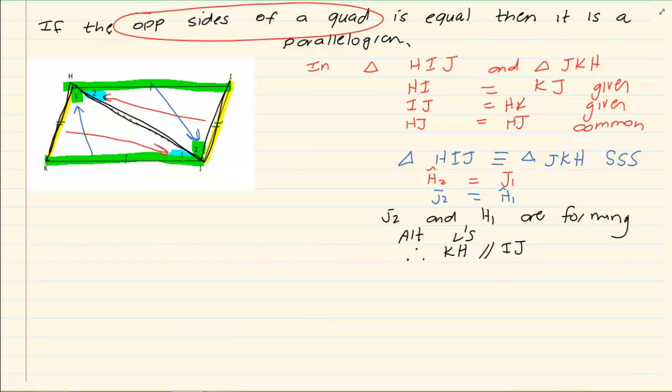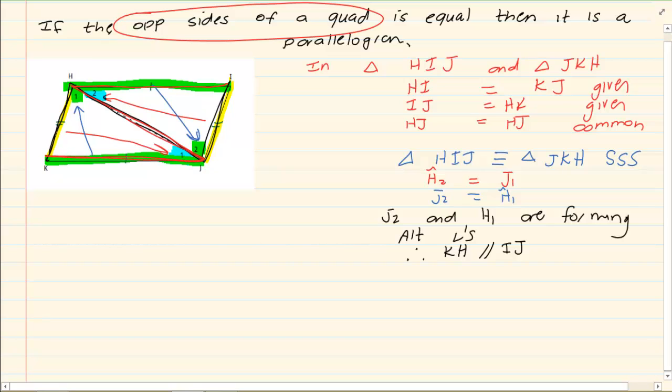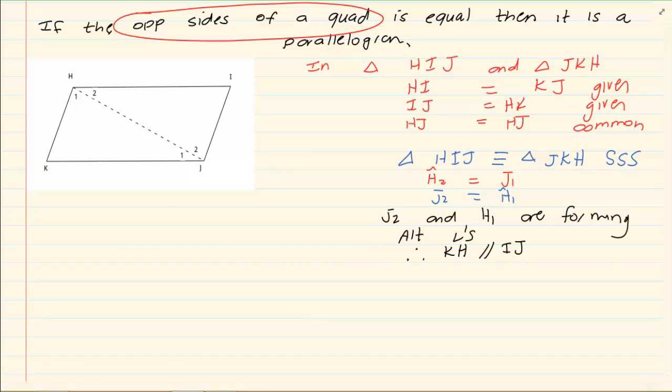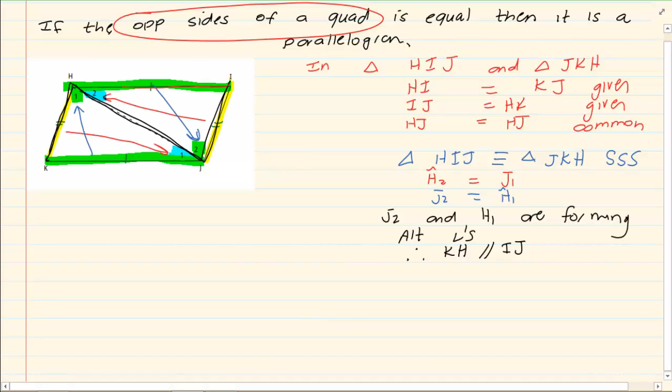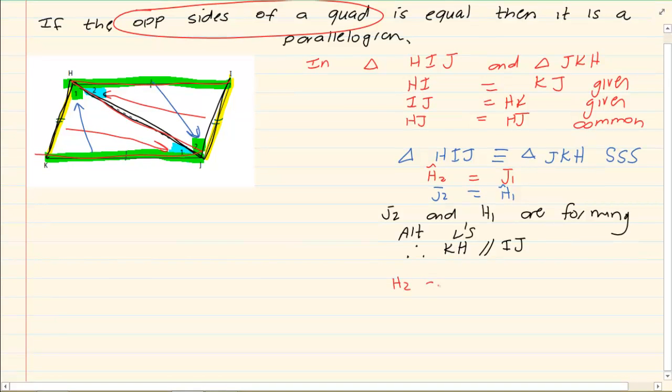And then if you look at the H2 and the J1, look at what they are doing. Can you see it's also forming a Z? It's also forming a Z. So we have that H2 and J1 are also forming alternate angles. Therefore, HI is parallel to KJ.